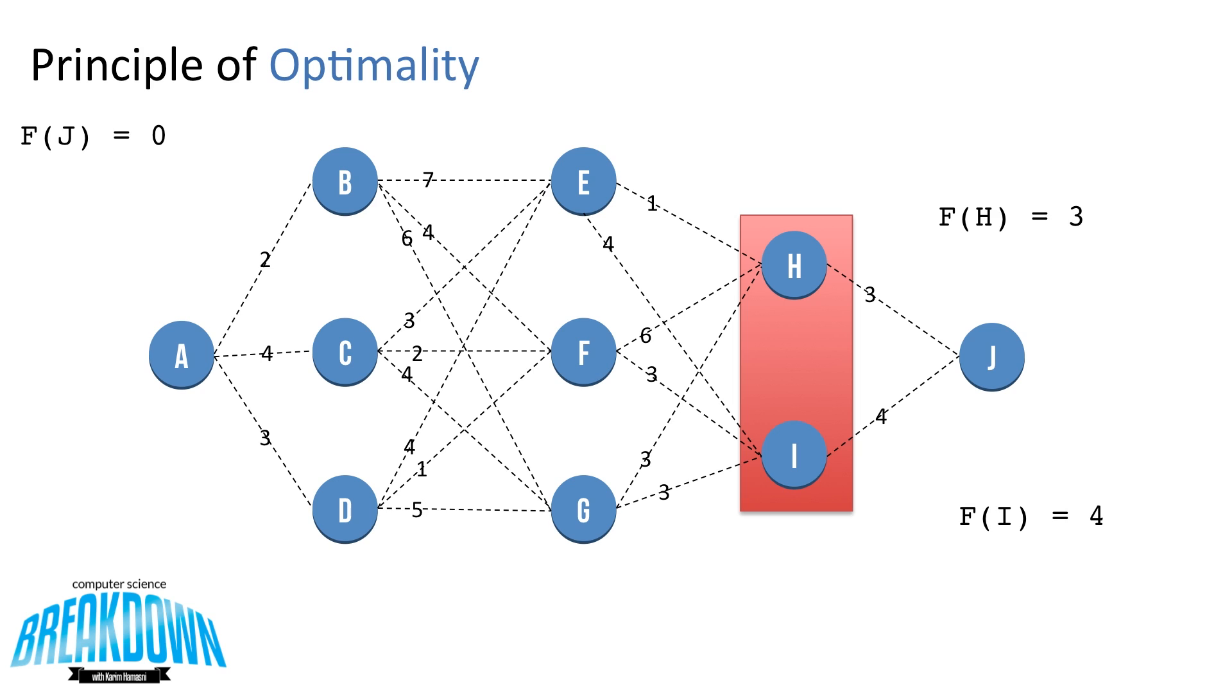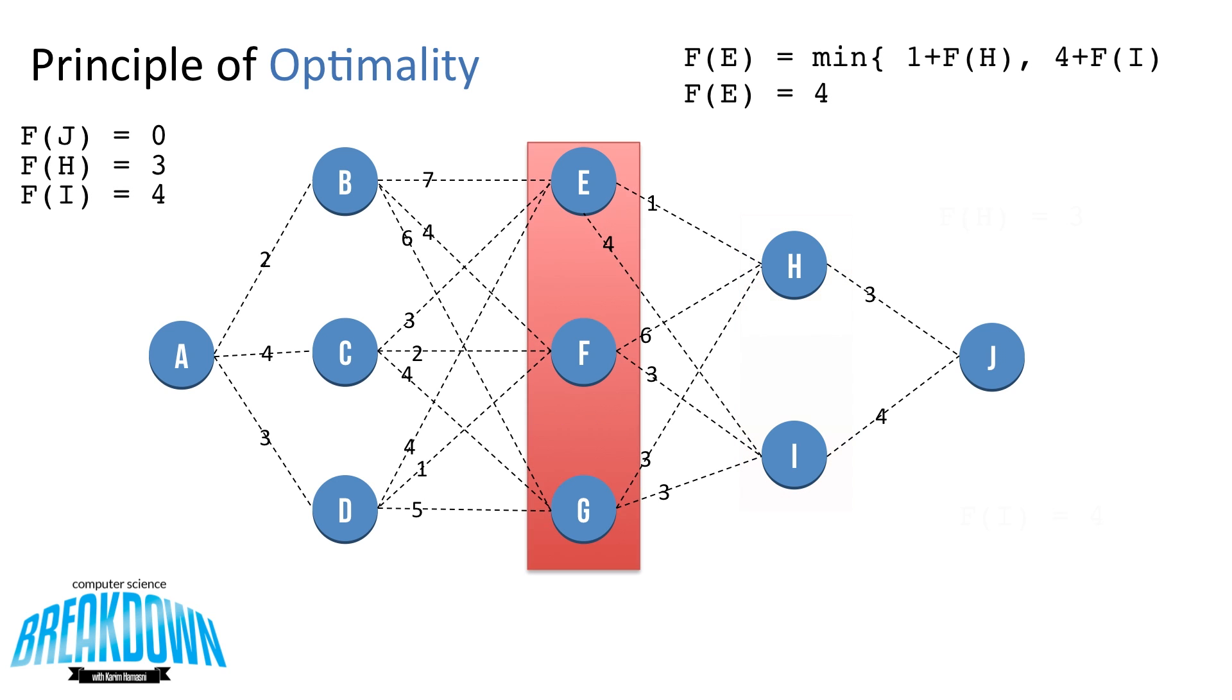Going back a level, we can calculate f of H and f of I, which we know are 3 and 4, simply based on the weighted edges. On our left side, we're going to keep a knowledge base with the actual costs of these functions. So I'm going to fill in f of H equals 3 and f of I equals 4 on the left.